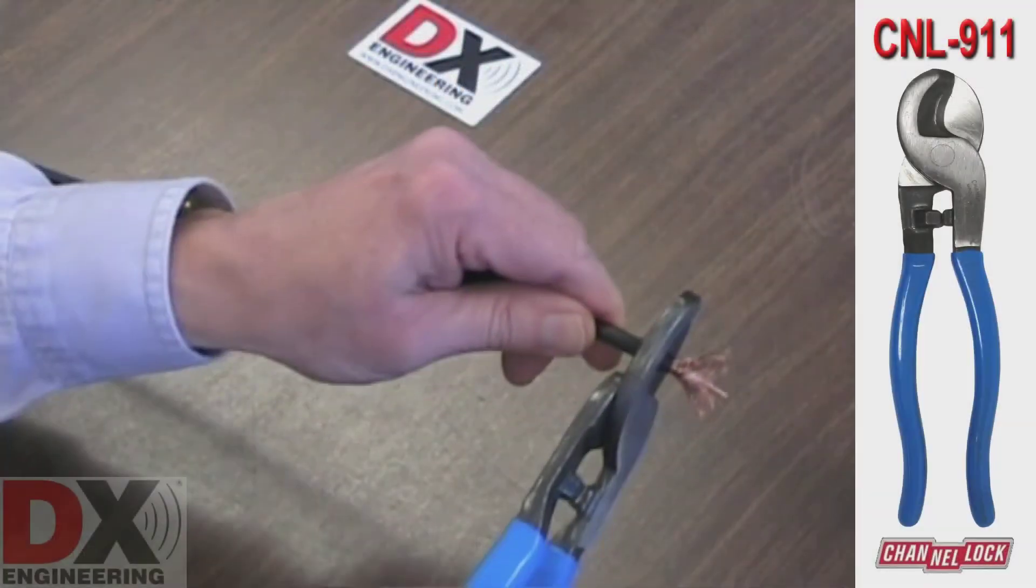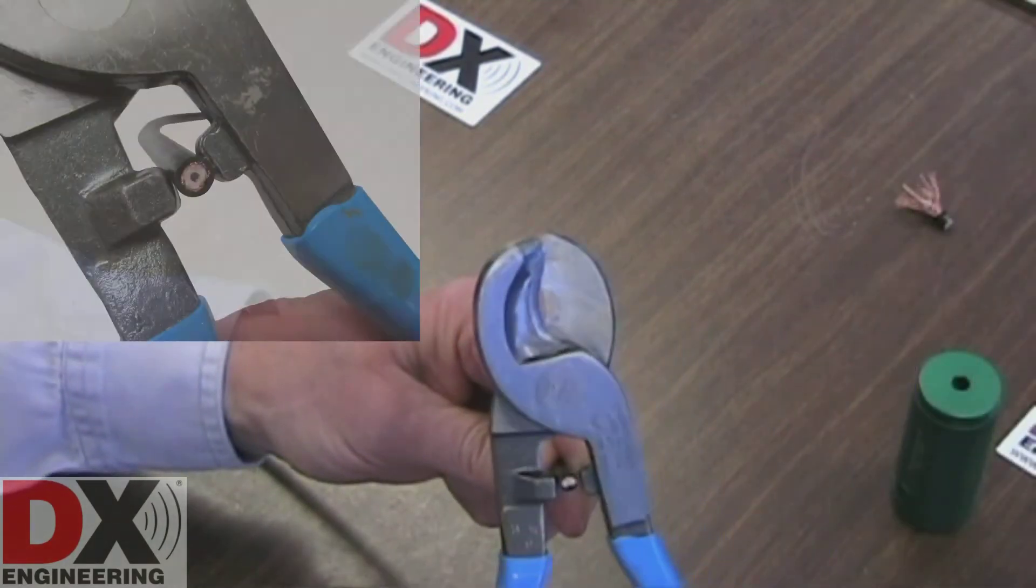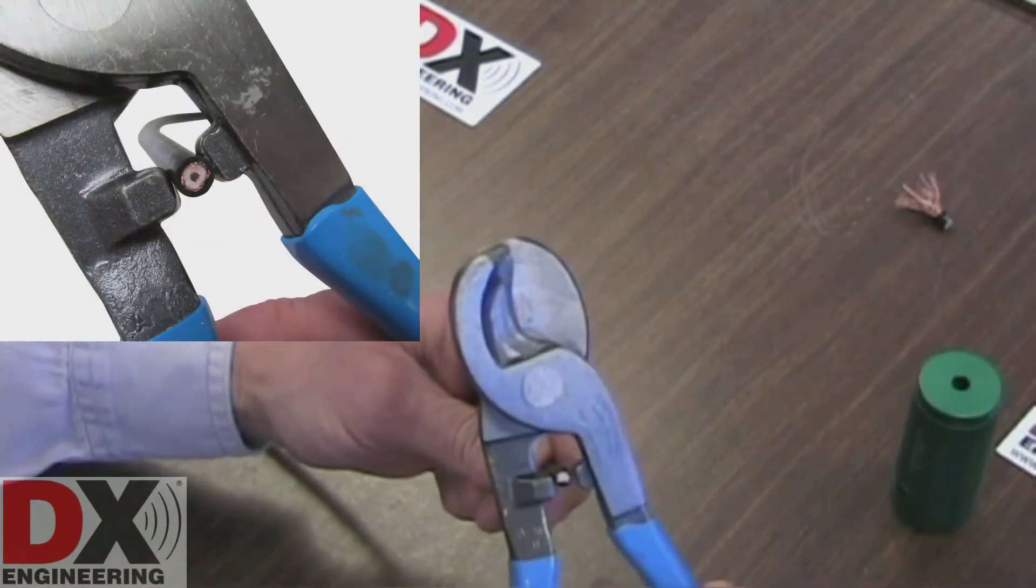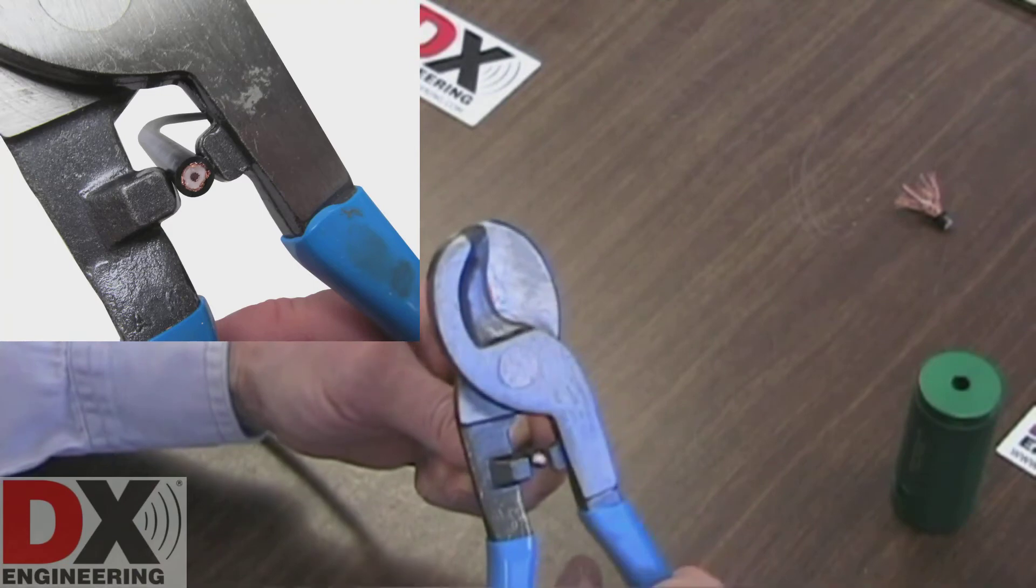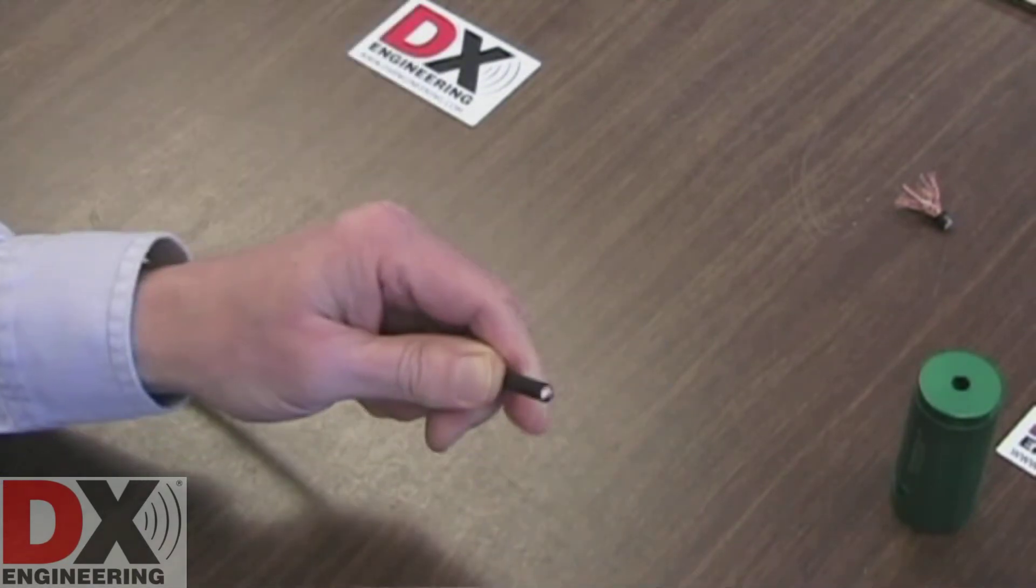Cut the coaxial cable using the CNL911 cutters to get a flush, clean cut. You can also use the CNL911 cutters to round out the cable. This is important to ensure the cable will feed into the preparation tool properly.